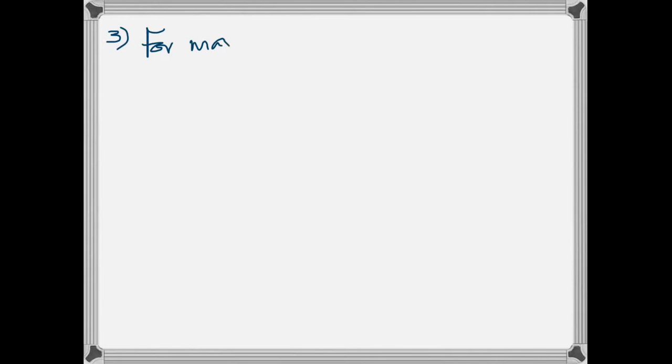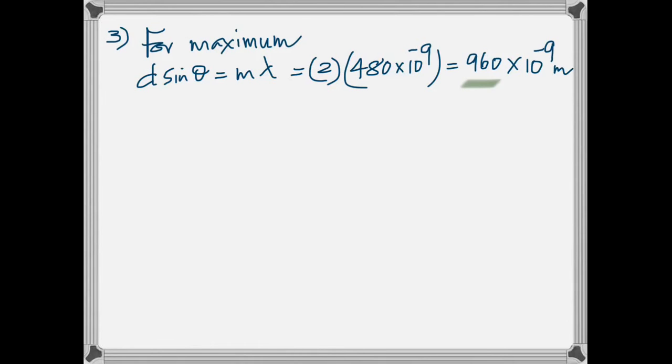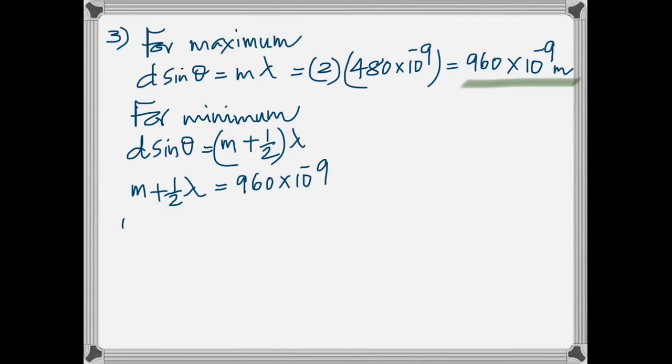In the third question, gives you the wavelength and tells you that the second order maximum. For second order maximum M is equal to 2, because when M is 0 it's the central maximum. Once again the same formulas. Looking for D sin theta, you've got M lambda. And for a minimum, because you're asked to find what wavelength of visible light would have a minimum at the same location, which means D sin theta should be the same, but the condition for minimum is M plus half lambda.